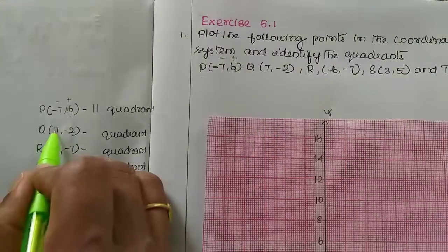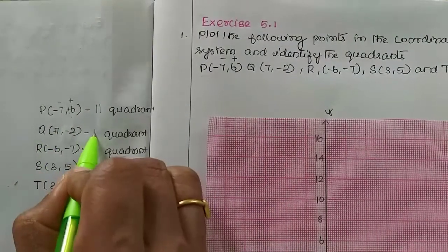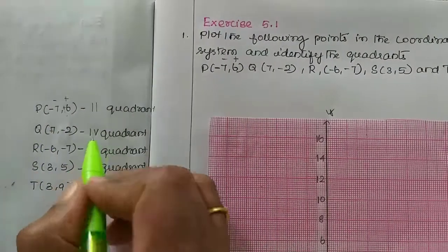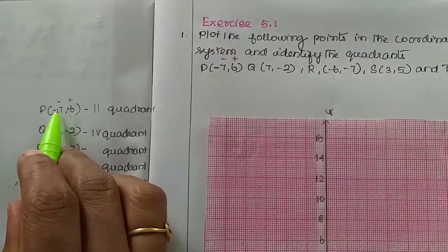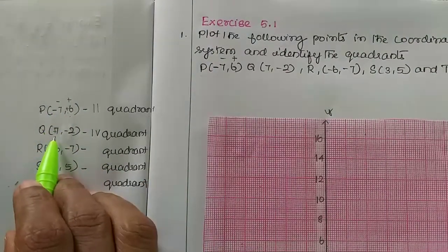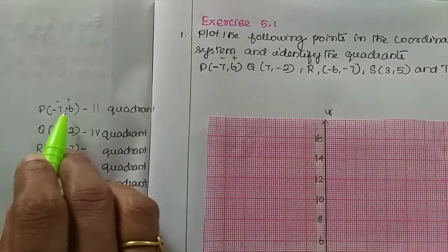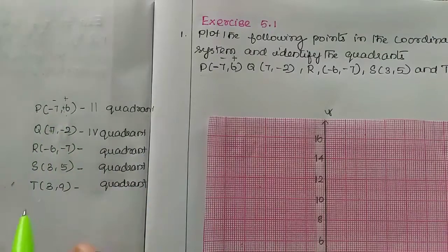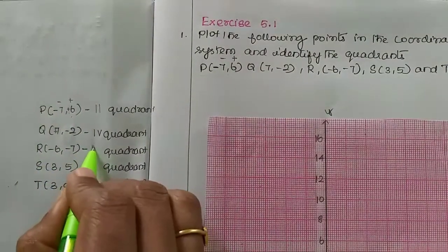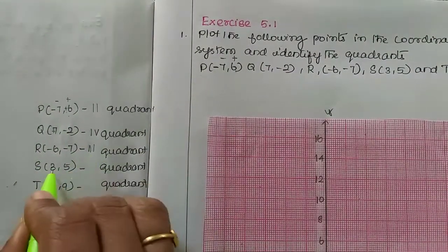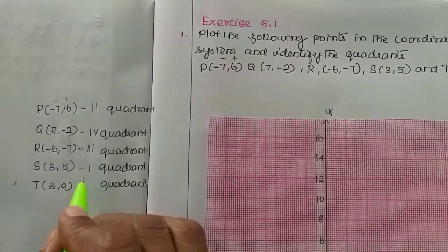Q is plus and minus, so plus minus is fourth quadrant. Two minus values are third quadrant. Two plus values are — sorry — first quadrant.